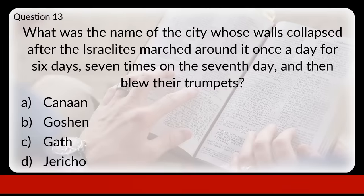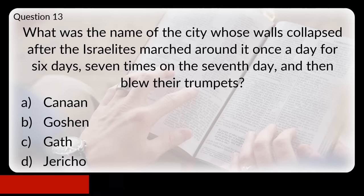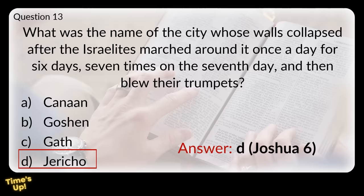Question thirteen: what was the name of the city whose walls collapsed after the Israelites marched around it once a day for six days, seven times on the seventh day, and then blew their trumpets? Was that Canaan, Goshen, Gath, or Jericho? That was Jericho.